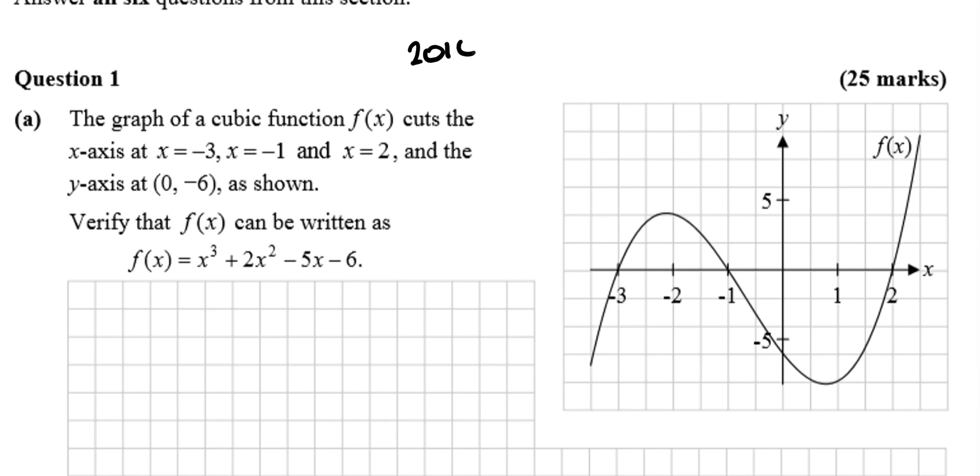So this is 2014, paper 1, question 1, and it's Leaving Cert higher level maths. The graph of a cubic function cuts the x-axis at x equals minus 3, x equals minus 1, and x equals 2, so making sure we know they're the roots, and the y-axis at 0 minus 6. So we know that point there is minus 6.